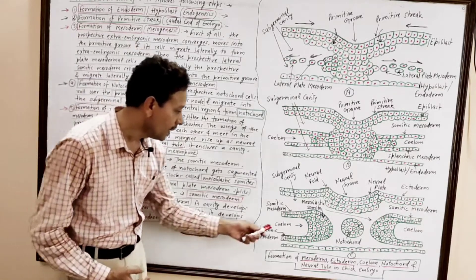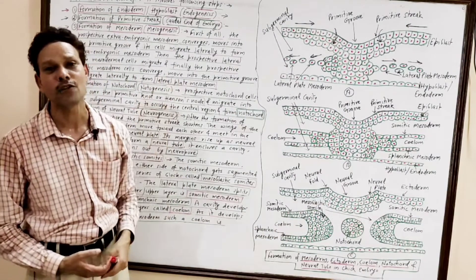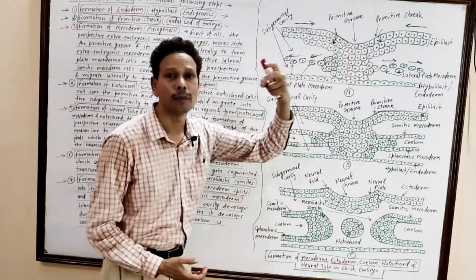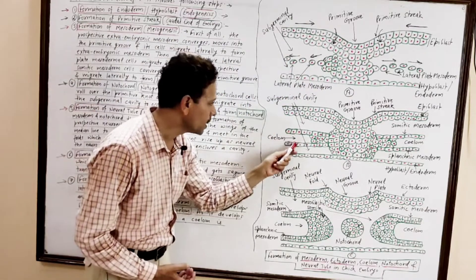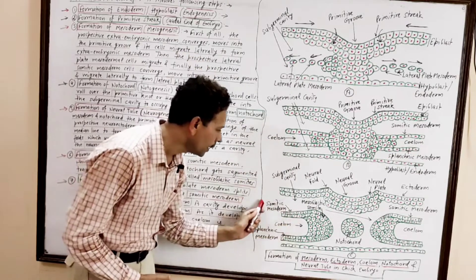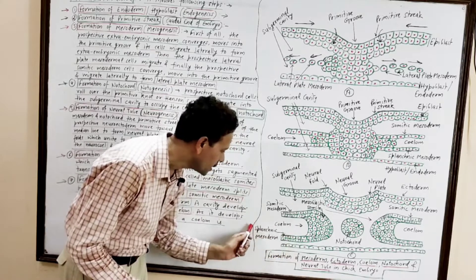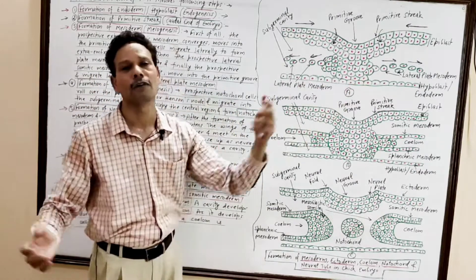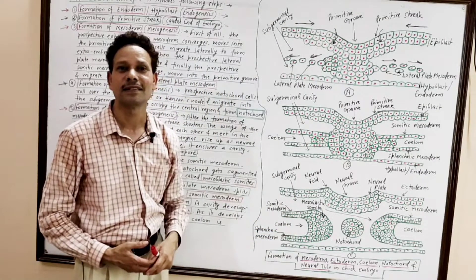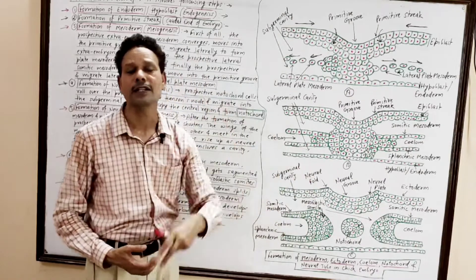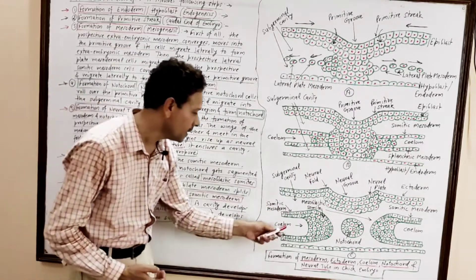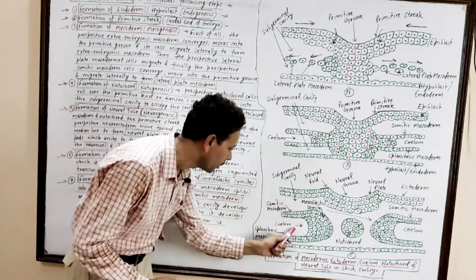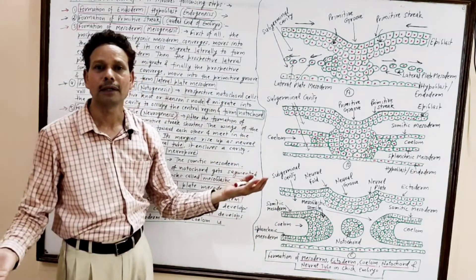The last step is formation of the coelom. This body cavity of the embryo is a schizocoele because it develops due to the splitting of the lateral plate mesoderm. As a result, two layers are formed: the outer somatic mesoderm and the inner splanchnic mesoderm. This schizocoele is a characteristic feature of coelomates. The coelom appears due to the splitting of the lateral plate mesoderm into outer somatic and inner splanchnic mesoderm.